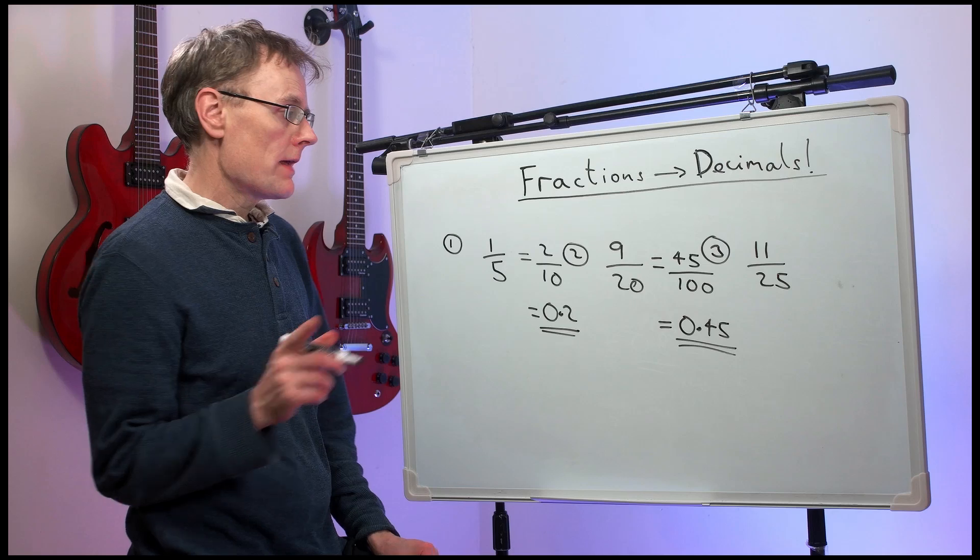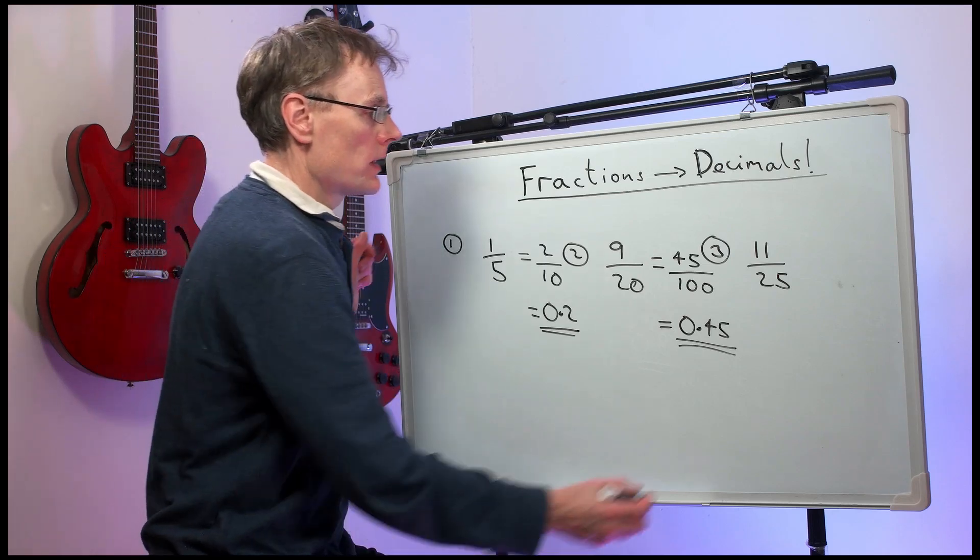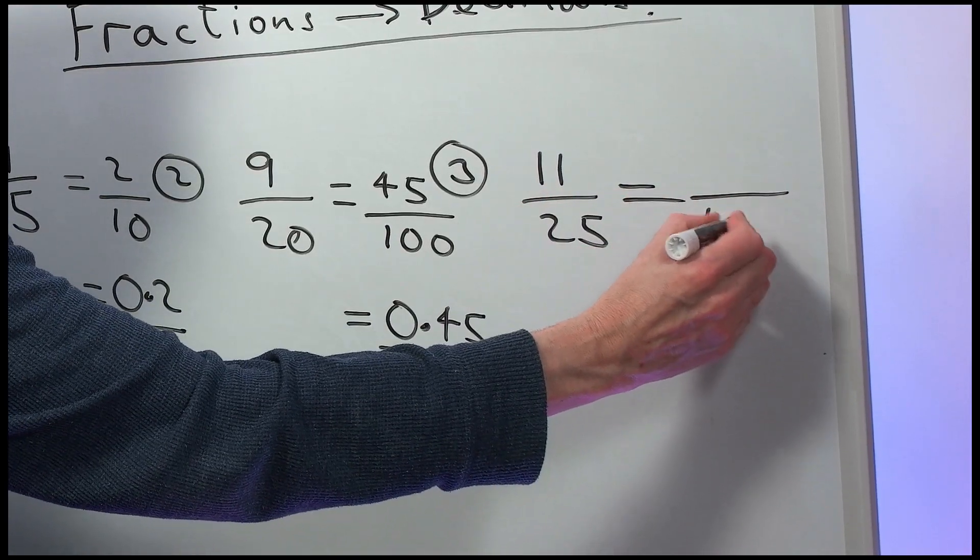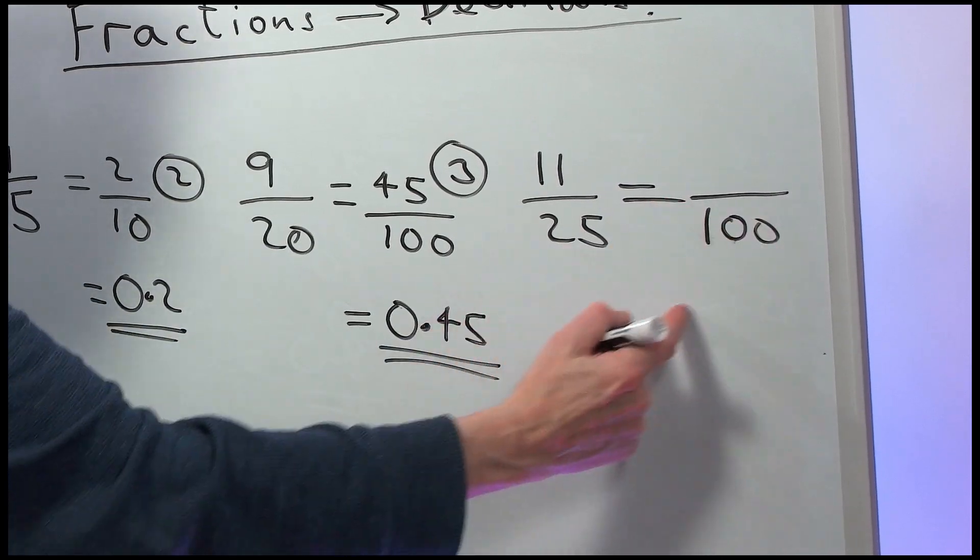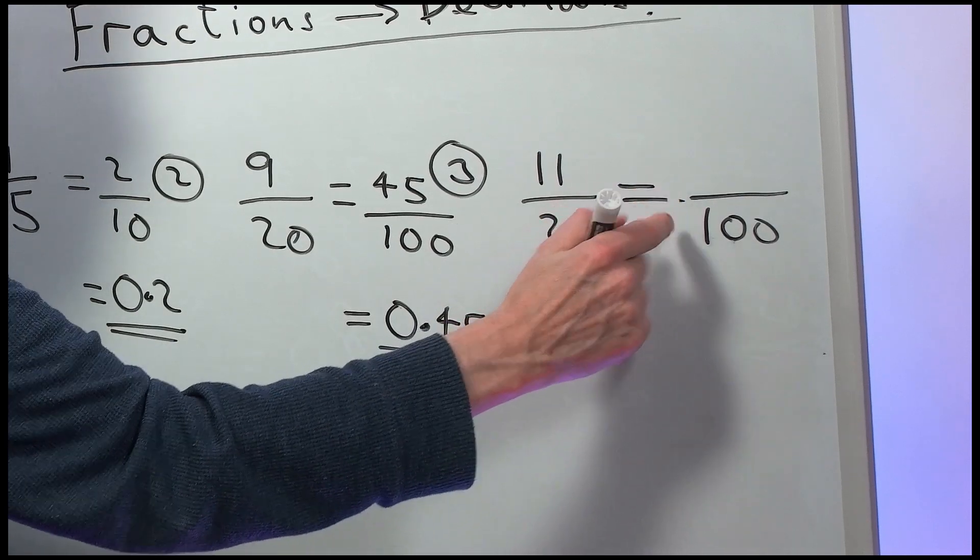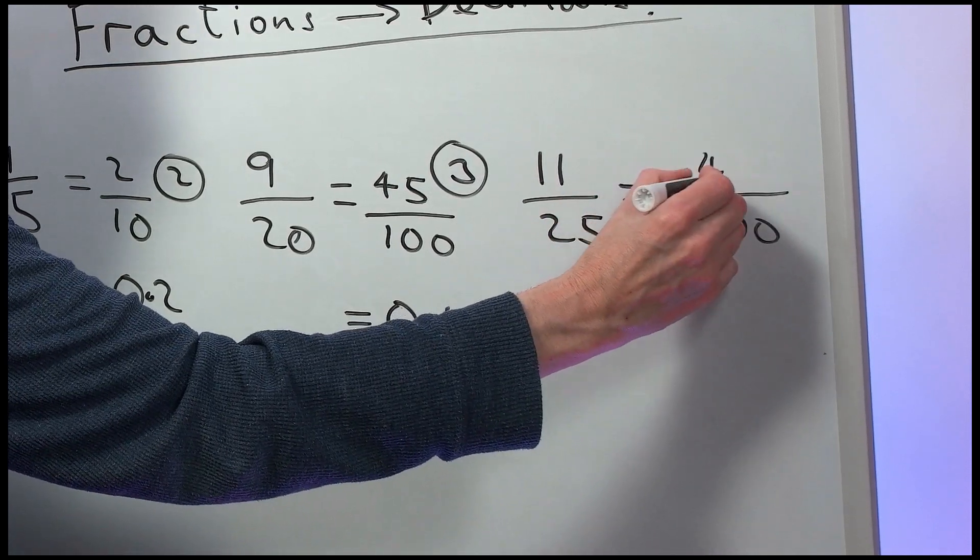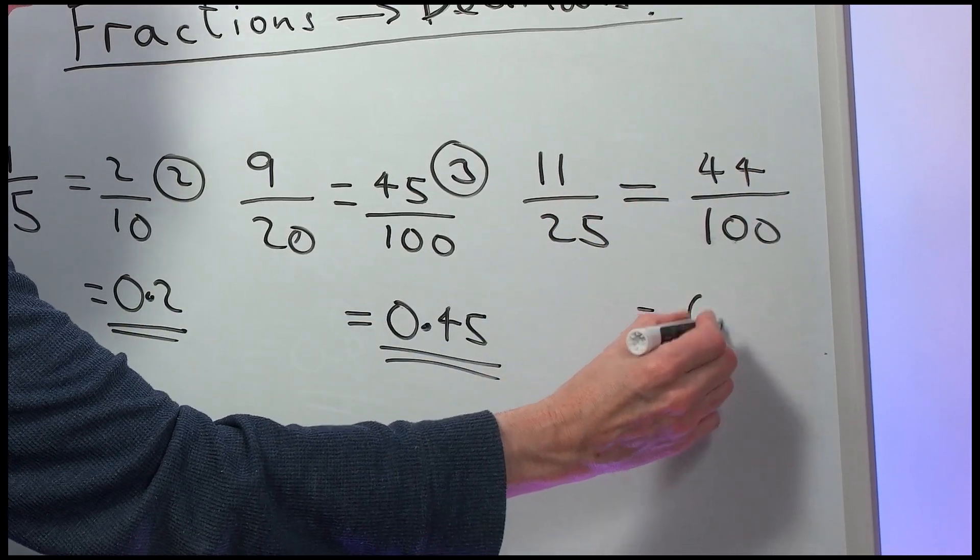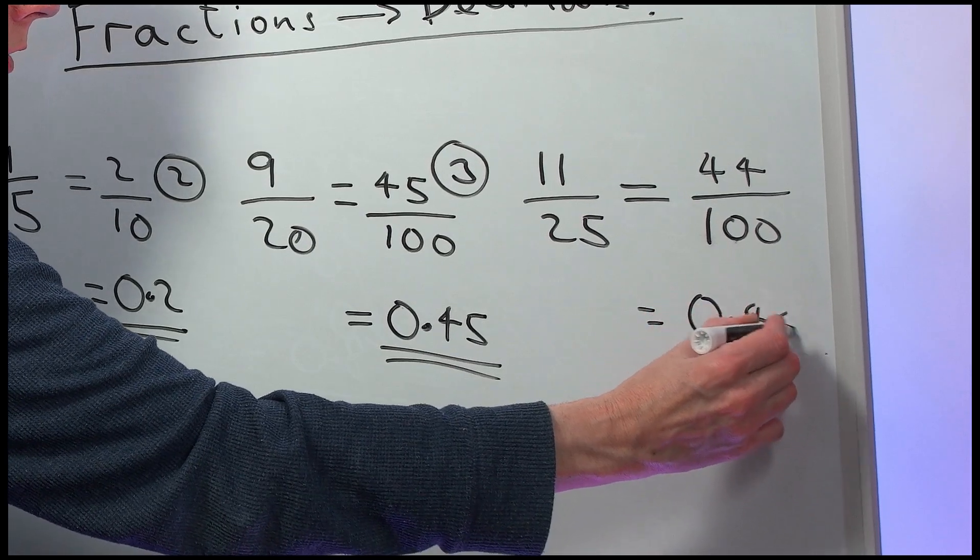Number three, eleven-twenty-fifths. Again, twenty-five goes into a hundred. We're multiplying the bottom by four, so we times the top by four. So, that is forty-four-hundredths, which is 0.44.